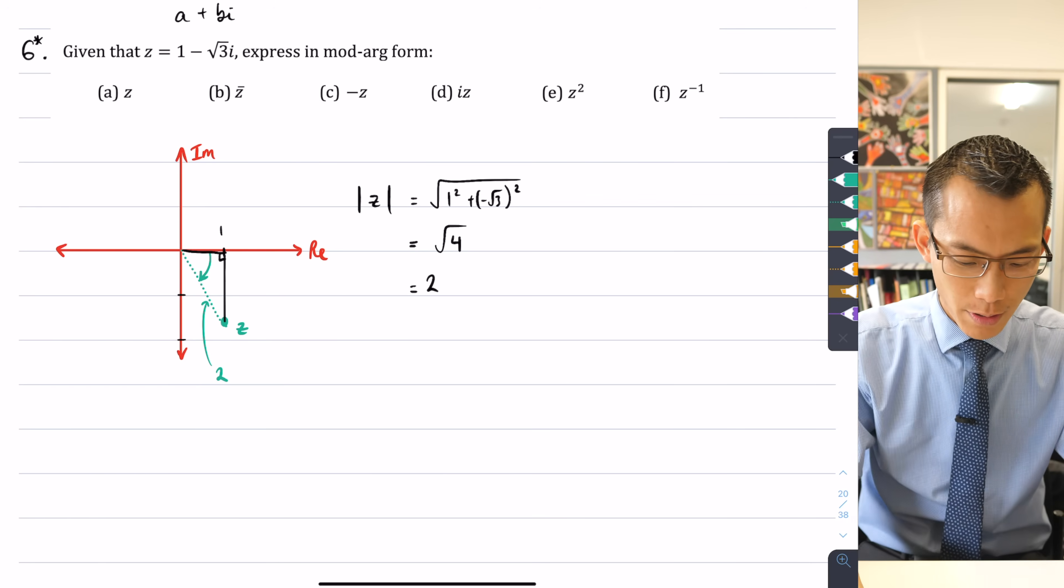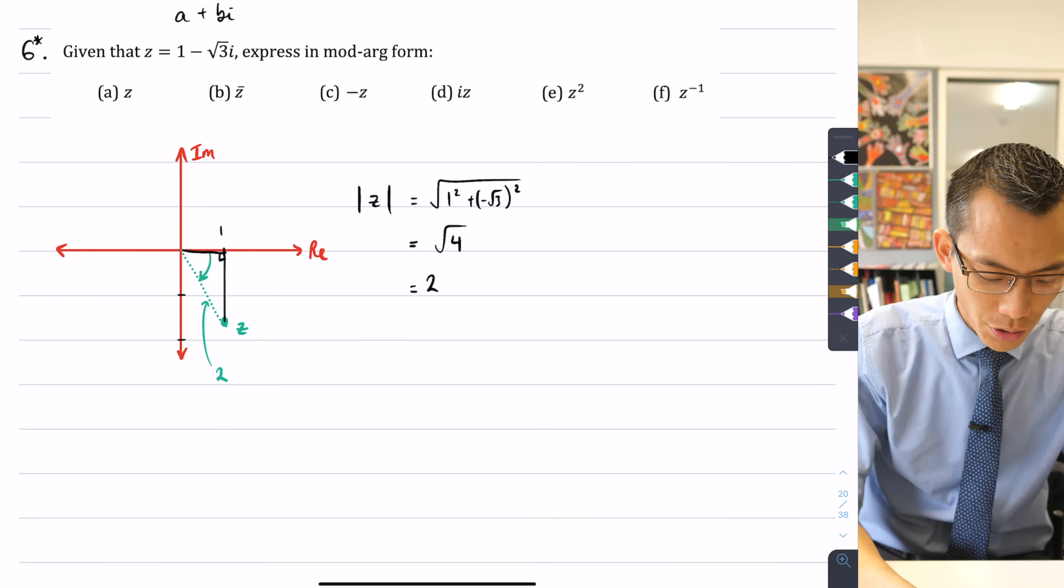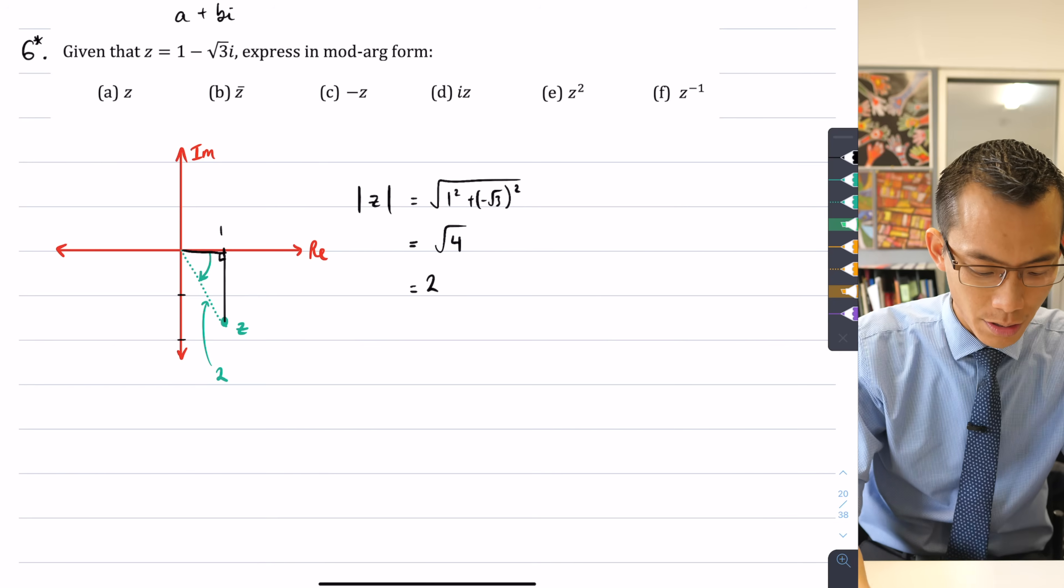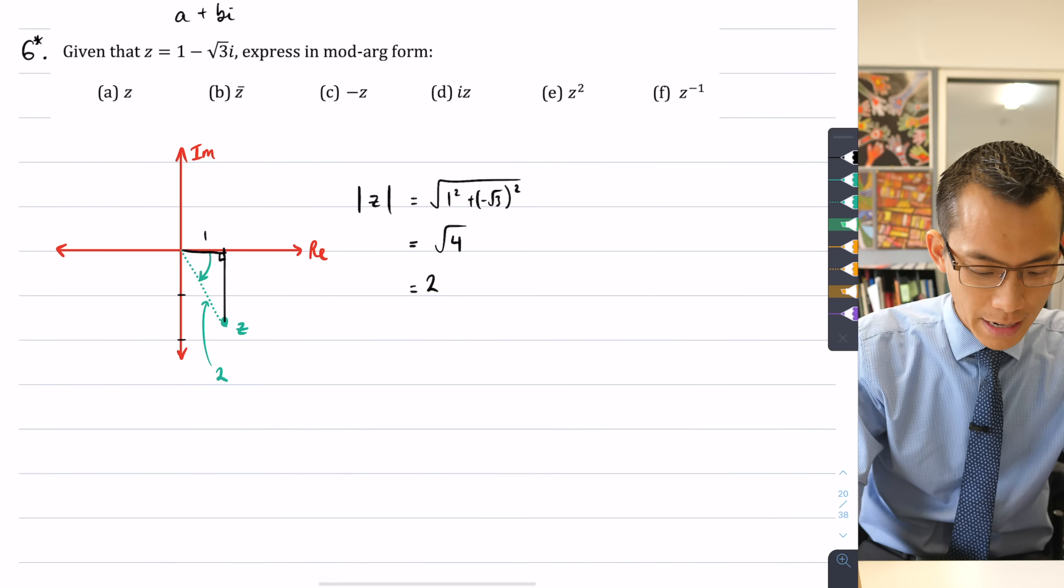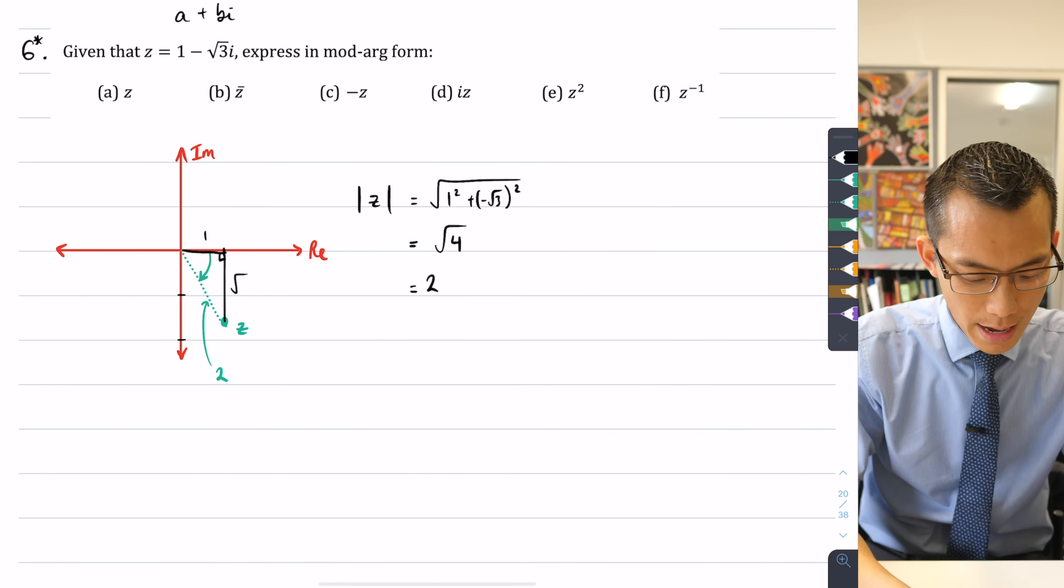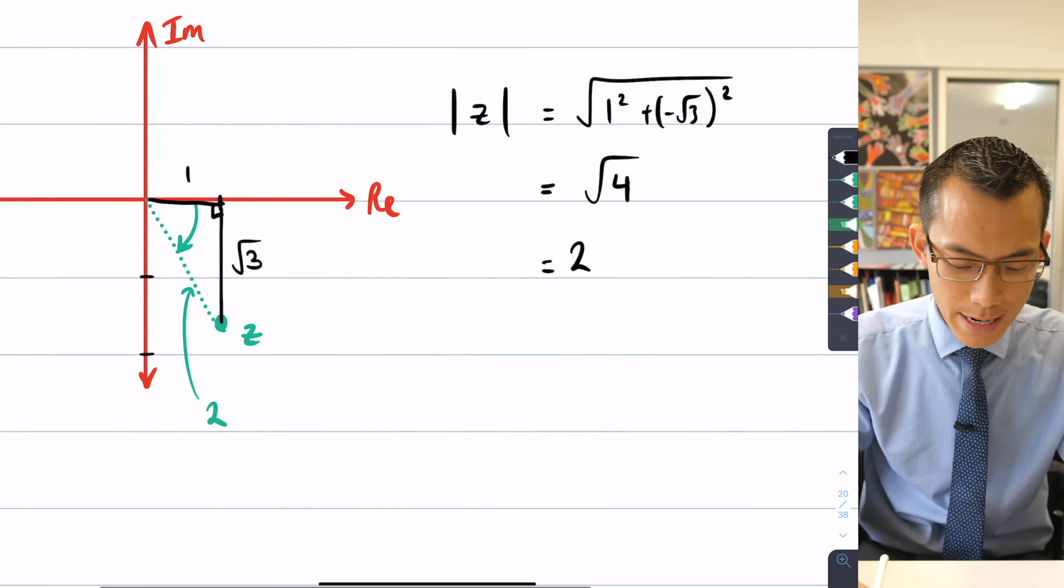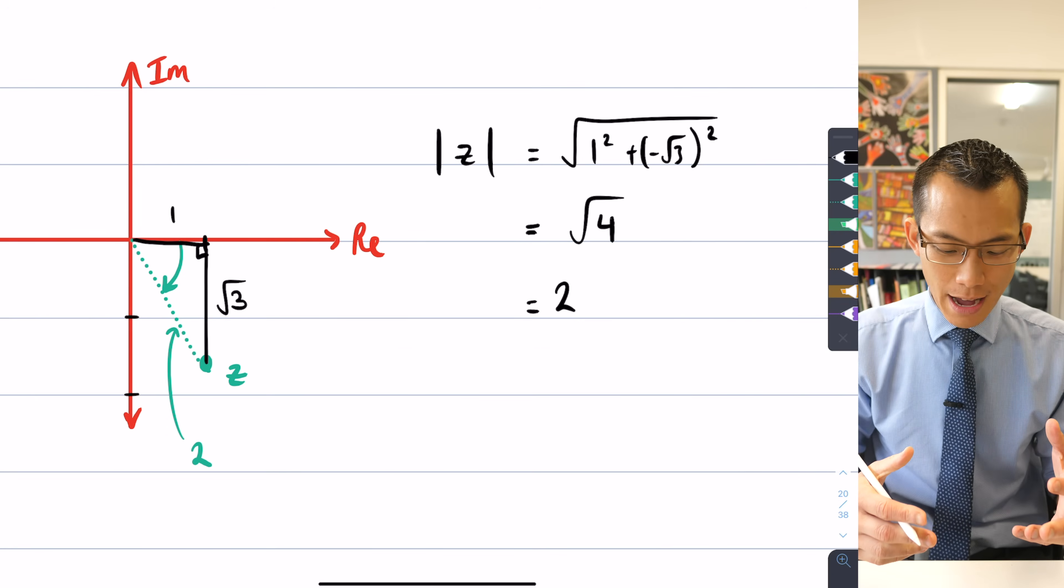And now, what about our argument? Well, again, these numbers have been chosen for you to be nice and neat. So when you think about this right angle triangle, the fact that it has a shorter side there of one and another shorter side there of root three, to get the angle, I can think about, well, in this right angle triangle, what is the angle that makes sense of this?